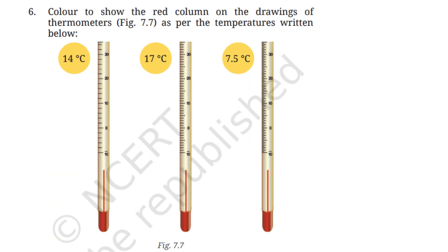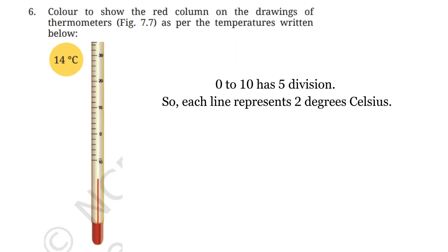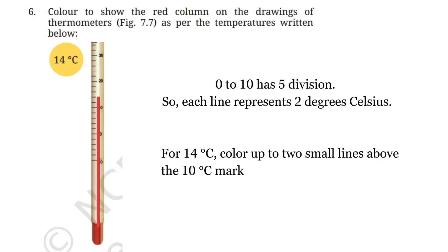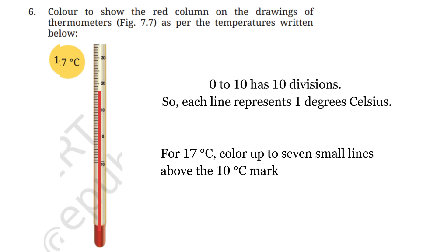Question 6: Color to show the red column on the drawings of a thermometer as per the temperatures written below. For the first picture, it has 0 to 10 divisions, so each line represents 2°C. For 14°C, color up to 2 small lines above the 10°C mark. For the second picture, it has 10 divisions so each line represents 1°C. For 17°C, color up to 7 small lines above the 10°C mark.